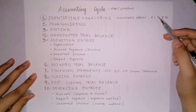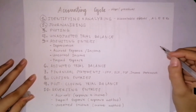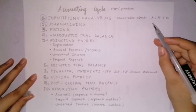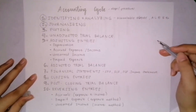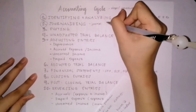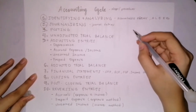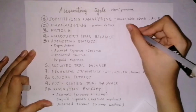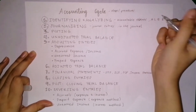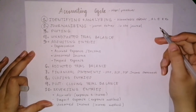After identifying the accountable events, we go to the second step: journalizing. Here, accountable events identified are recorded in the journal through journal entries. Journal entries are the entries we make when recording transactions. These journal entries are recorded in the book we call the journal. The journal is a book of original entry where transactions are initially and chronologically recorded.